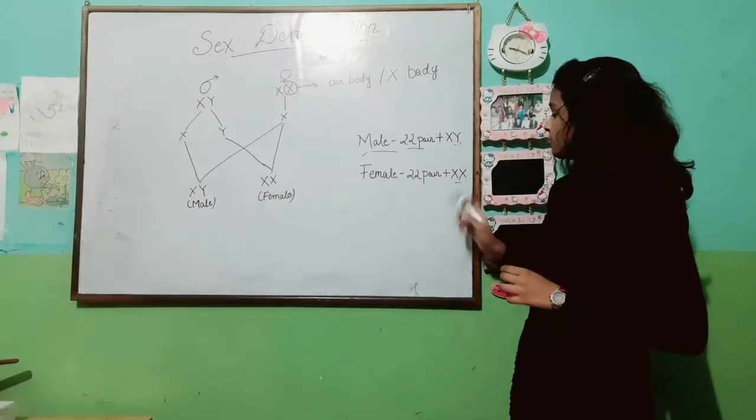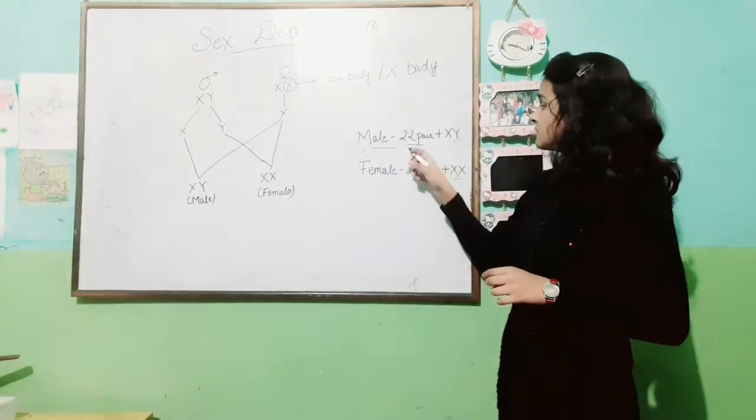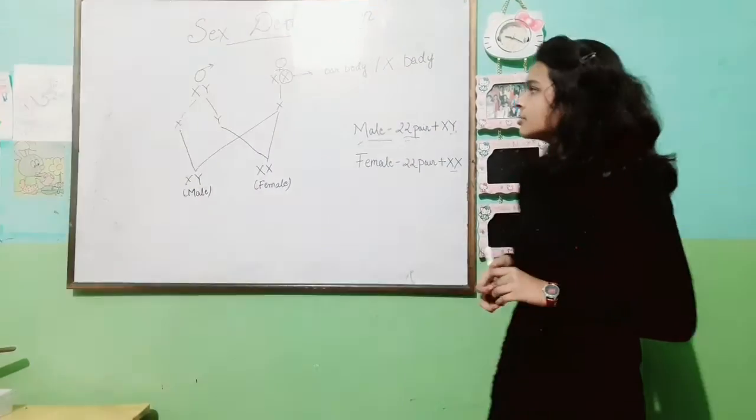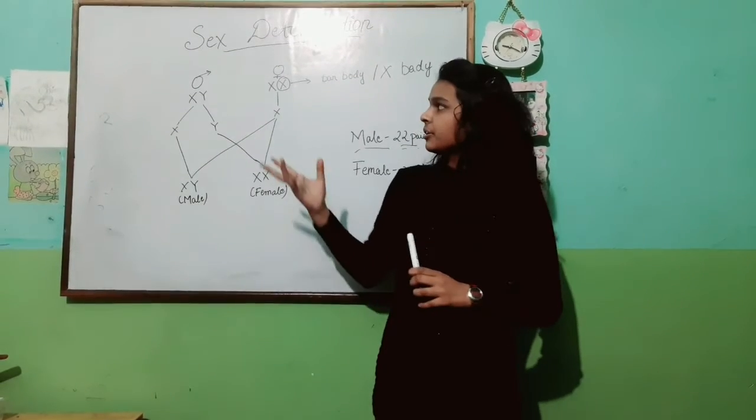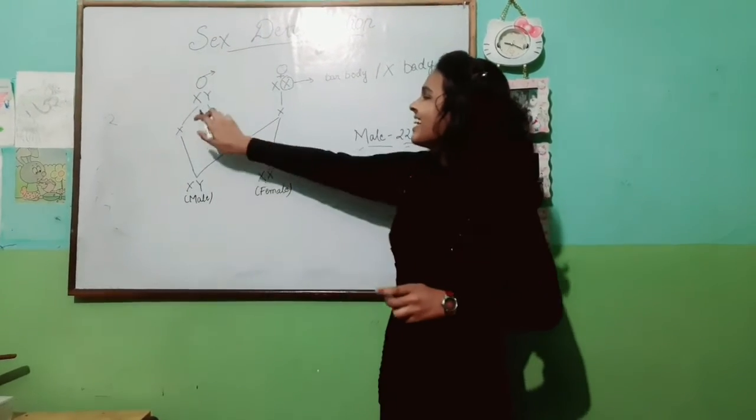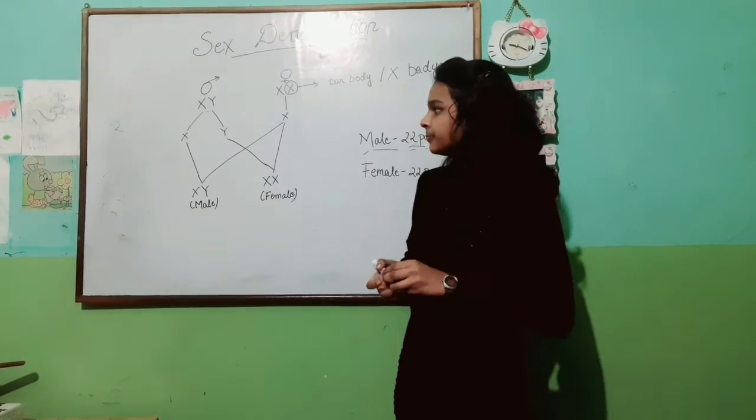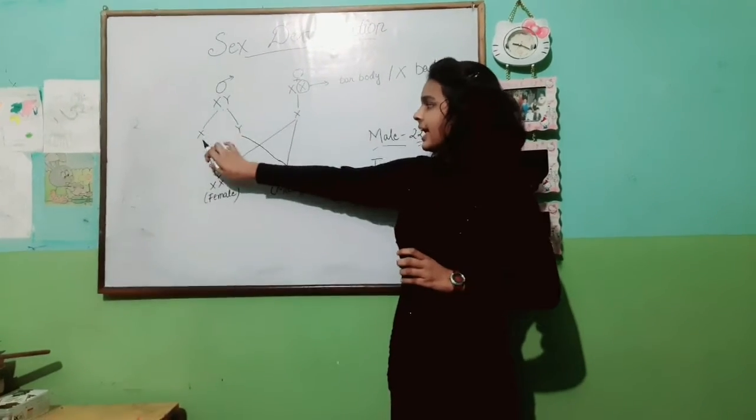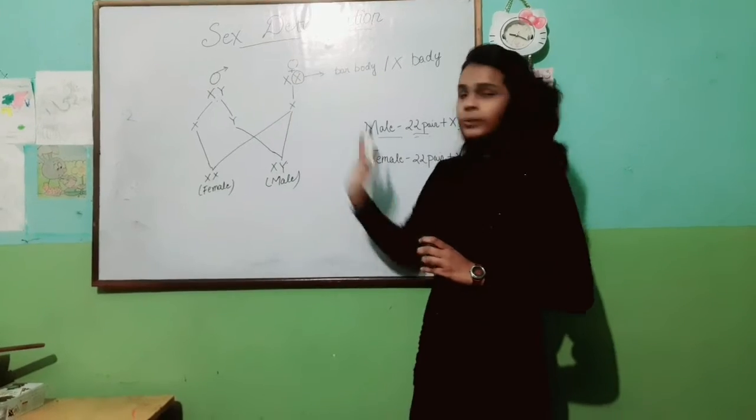XY and XX chromosomes are known as sex chromosomes, and the rest 22 pairs are known as autosomes. So, if we do a cross between male and female, XY and XX, then males have gametes X and Y and females have gametes only X.